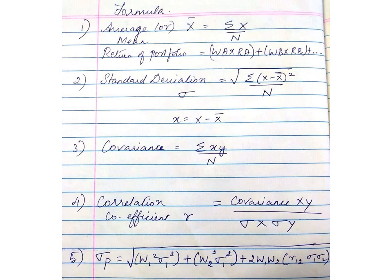Next, to calculate the covariance: Cov(X, Y) = Σ(xy) / N, where x and y are the small deviations. Then the correlation coefficient R = Cov(X,Y) / (σX × σY). The last formula is the standard deviation of the portfolio: square root of [WX² × Var(X) + WY² × Var(Y) + 2 × WX × WY × R × σX × σY].